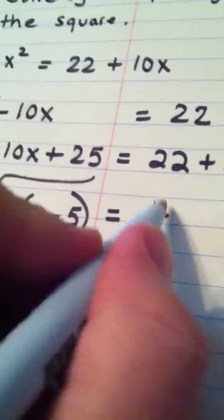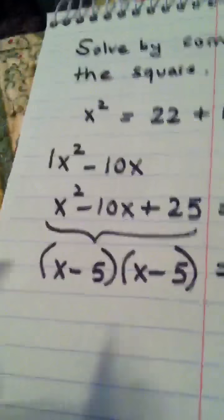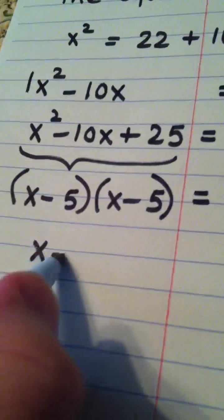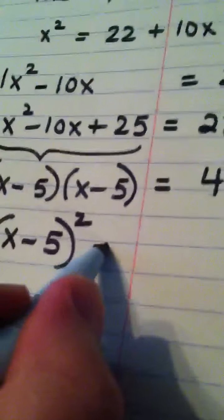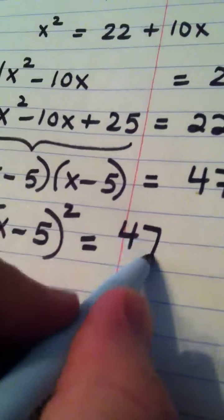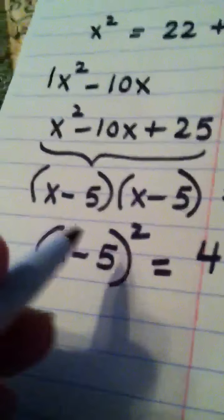plus 25 is 47. This actually becomes x minus 5 quantity squared is equal to 47.